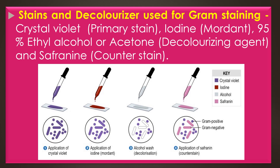The stains and decolorizer used for the gram staining technique are crystal violet, iodine, 95% ethyl alcohol or acetone, and safranine. Crystal violet acts as a primary stain, iodine acts as a mordant, 95% ethyl alcohol or acetone acts as a decolorizing agent, and safranine acts as a counter stain. The mordant iodine forms links between the cell wall of the bacteria and the primary stain, crystal violet.